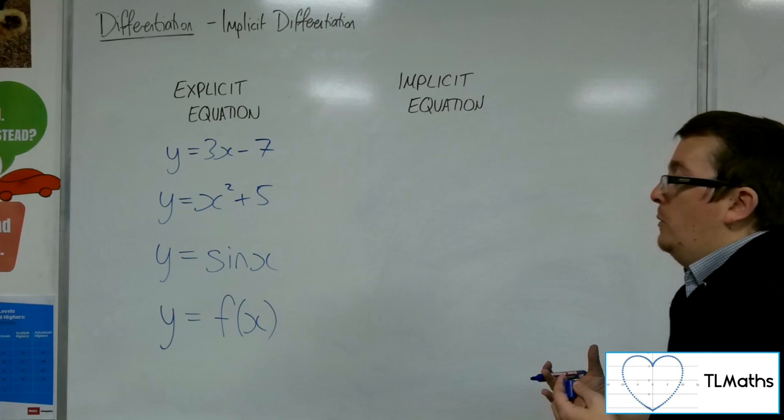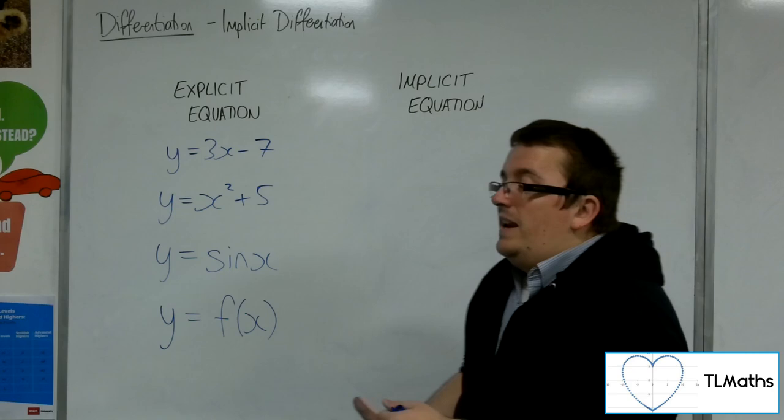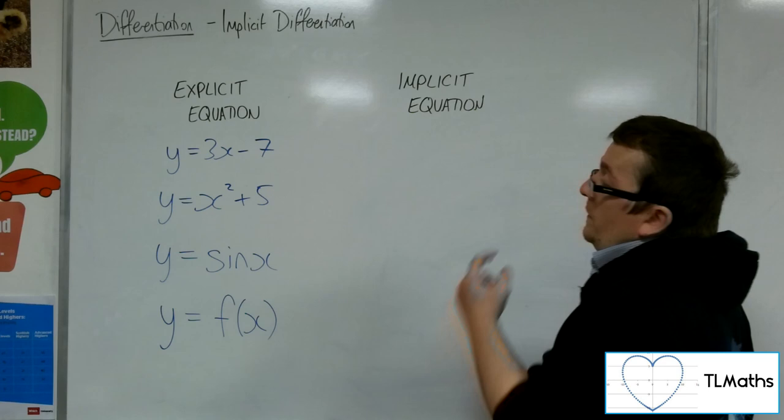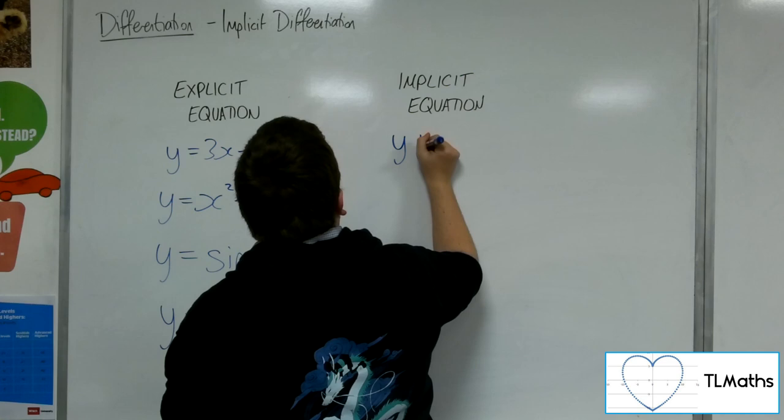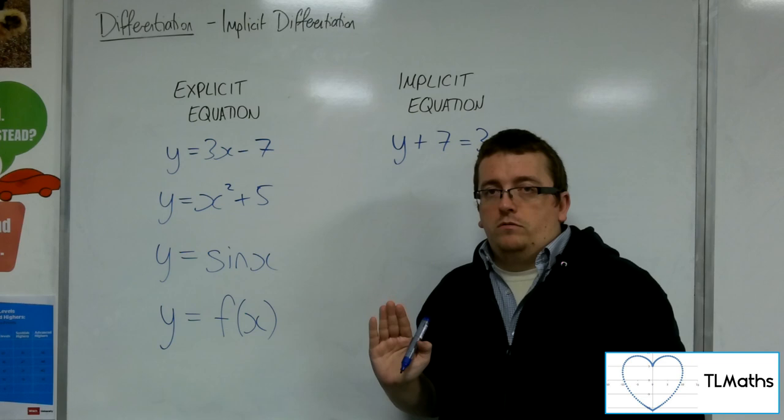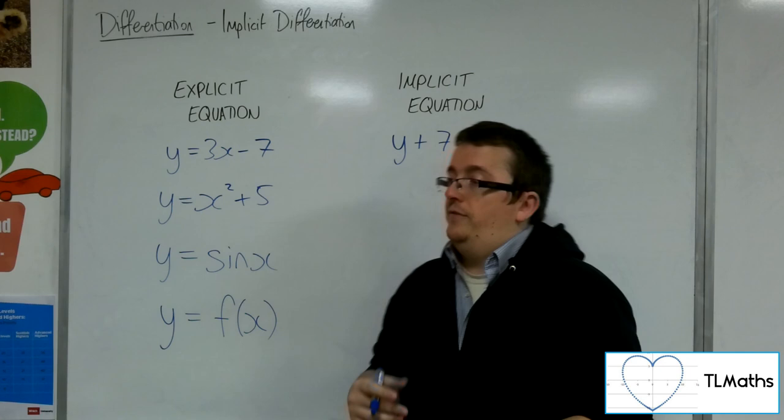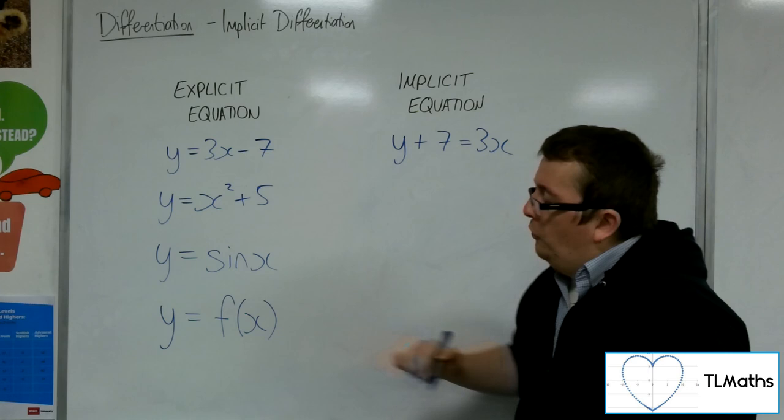Now, that doesn't mean that the same equation can't be written in another way. Because, for example, that first one there, y equals 3x minus 7, I could just add the 7 to both sides. And this is no longer an explicit equation, because I am not writing y explicitly in terms of a function of x. In fact, I've got that y plus 7. So it's not in this format anymore. And when it's not in that format, it's not an explicit equation. We would refer to it as an implicit equation.